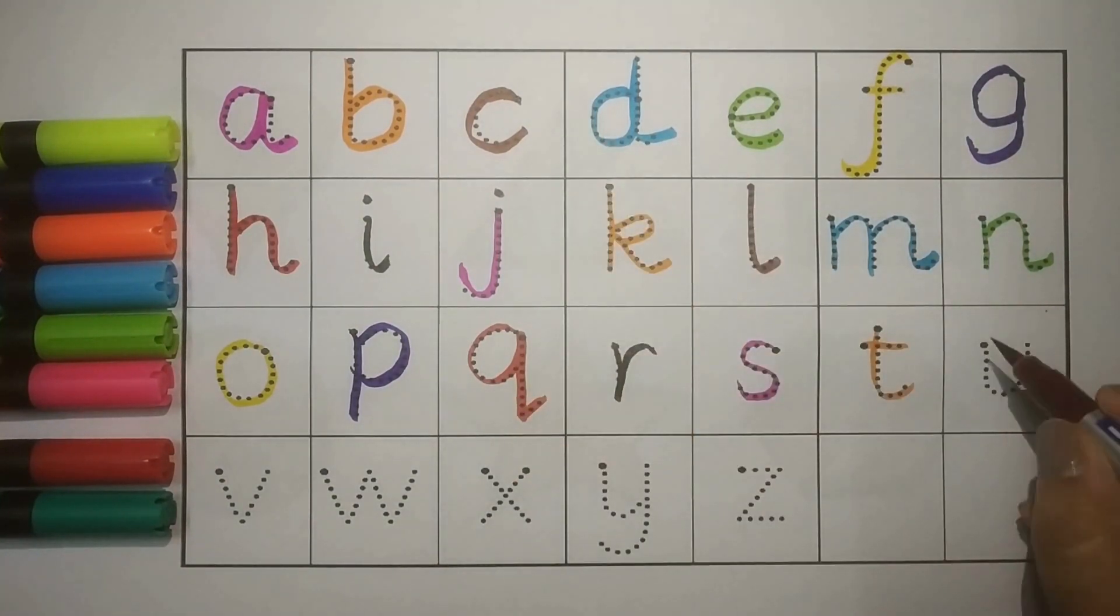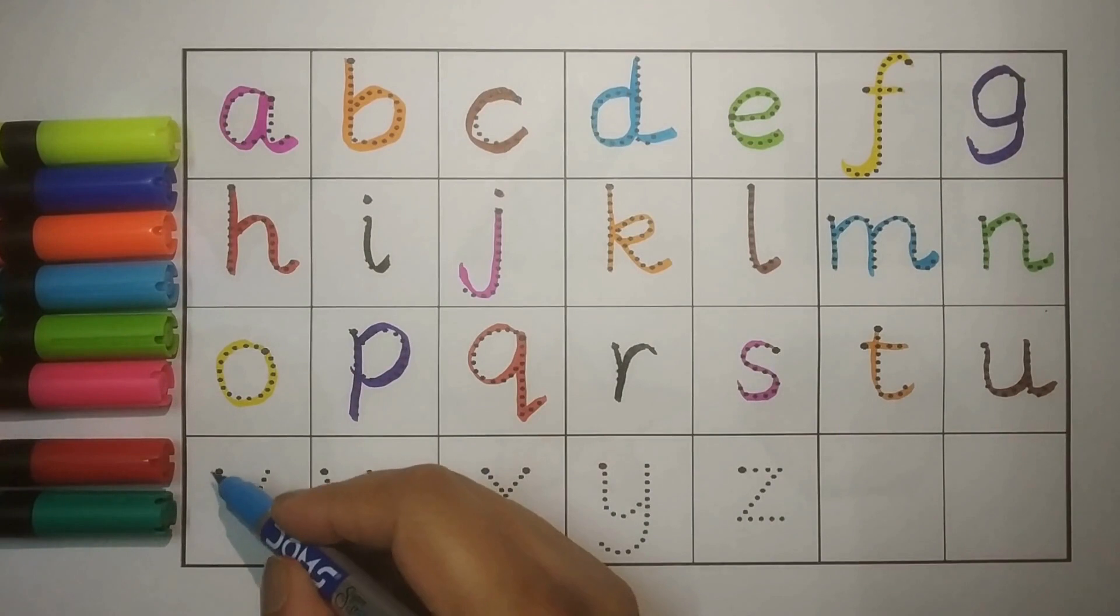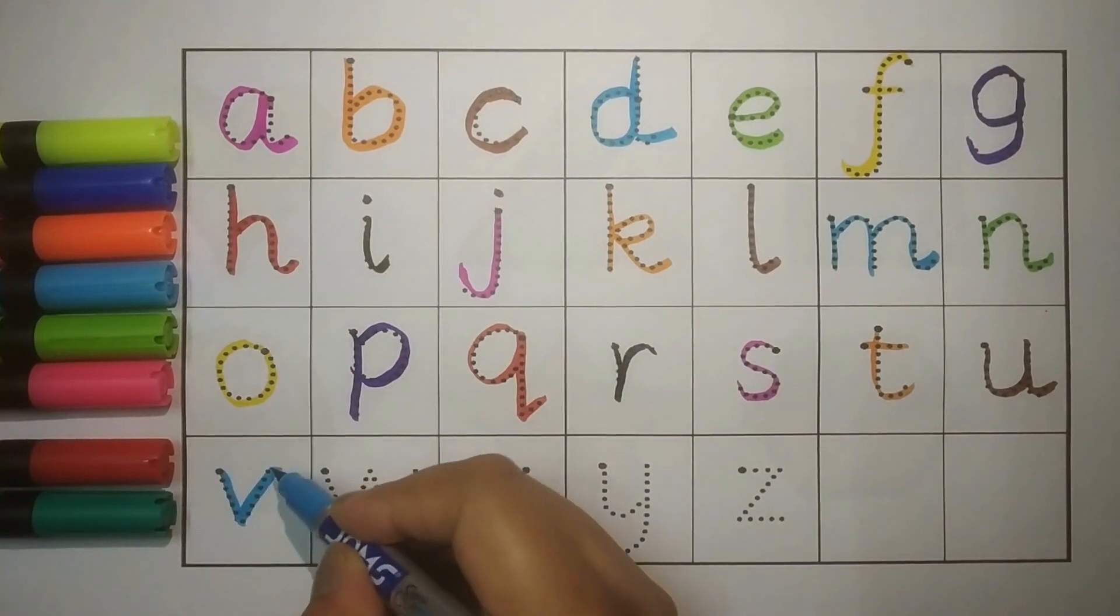Brown U, U for Umbrella Chhatri. Blue. V, V for Vessel Vartal.